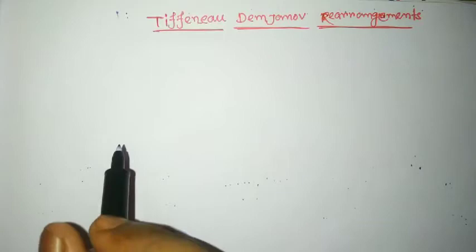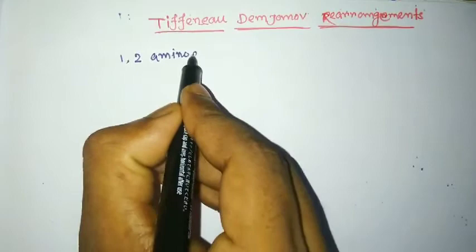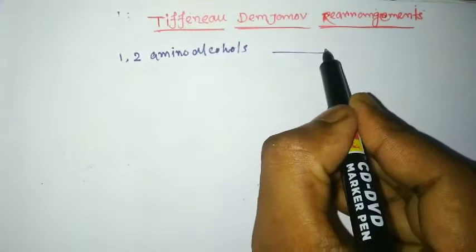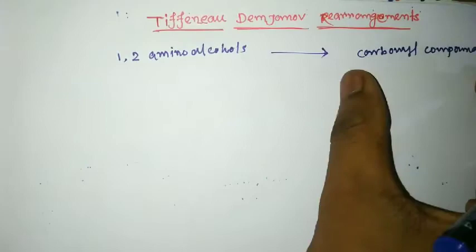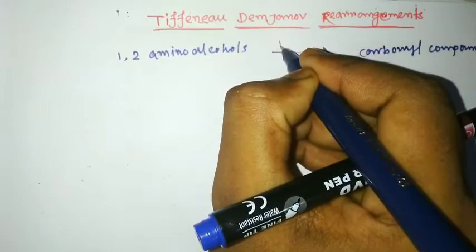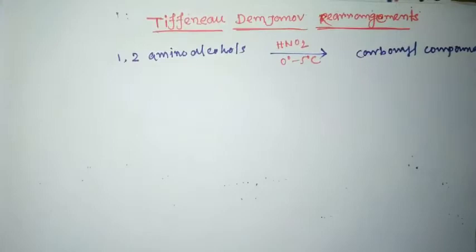Hello, my dear students, welcome to Chem Explain. Today we are going to discuss the Tiffeneau-Demjanov rearrangement. Here, 1,2-amino alcohols get converted to a carbonyl compound like aldehyde or ketone in presence of nitrous acid and temperature 0 to 5 degrees Celsius. This rearrangement is called the Tiffeneau-Demjanov rearrangement.